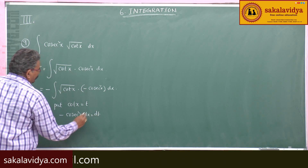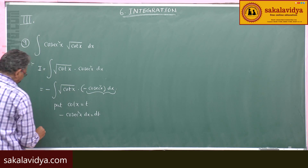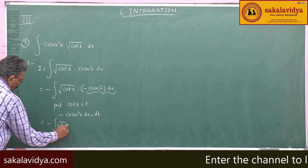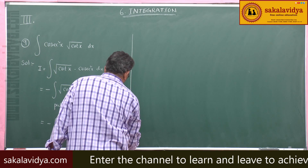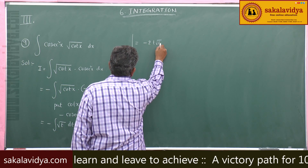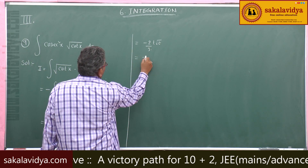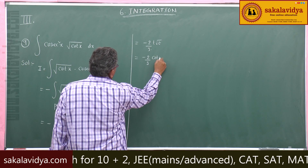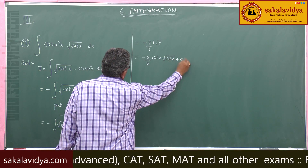This gives dt, and root cot x becomes root t. So we have minus integral of root t dt, which equals minus 2t root t divided by 3. Substituting back, t stands for cot x, giving minus 2 by 3 times cot x times root cot x plus constant of integration.